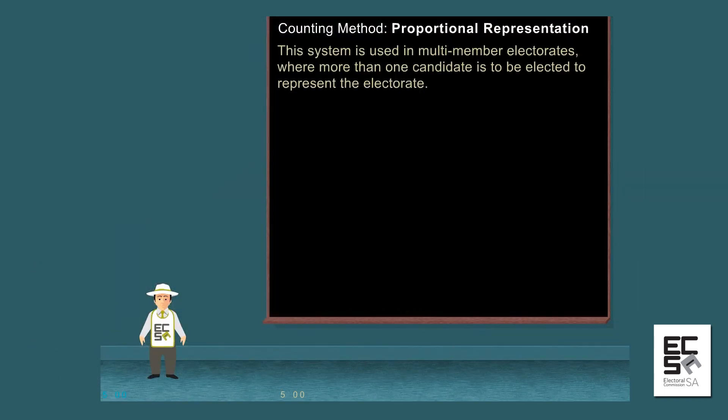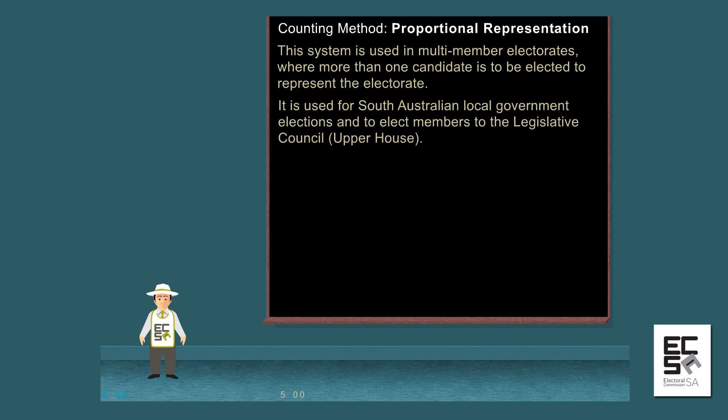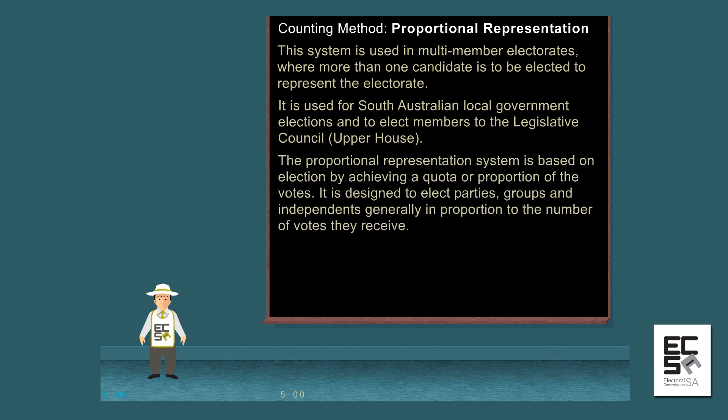This system is used in multi-member electorates, where more than one candidate is to be elected to represent the electorate. It is used for South Australian local government elections and to elect members to the Legislative Council, Upper House. The proportional representation system is based on election by achieving a quota or proportion of the votes. It is designed to elect parties, groups and independents, generally in proportion to the number of votes they receive.